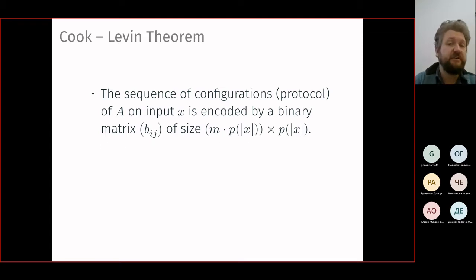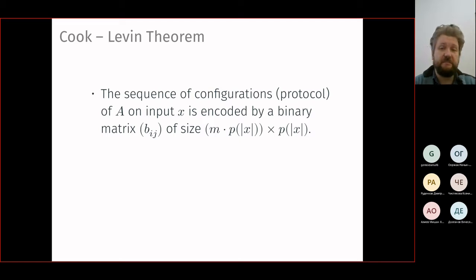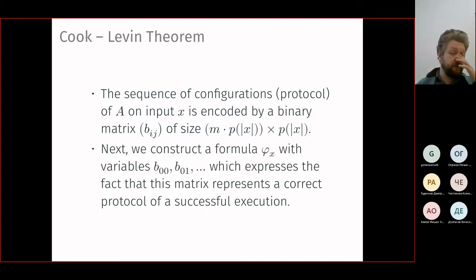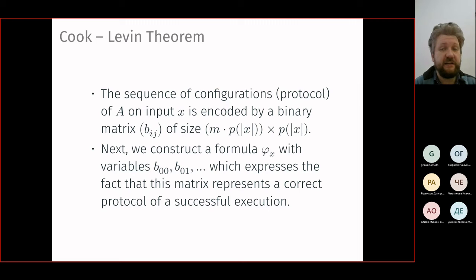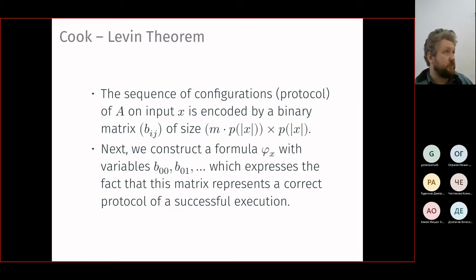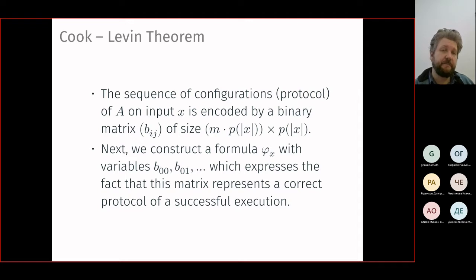This binary matrix — the correct protocol — will be the witness encoded as a satisfying assignment for a boolean formula. The matrix is a tuple of zeros and ones; we denote its elements by boolean variables b_{i,j}. We construct a formula φ expressing the fact that this matrix represents a correct protocol of a successful execution of our machine. So: input x gives answer yes if and only if there exists a successful execution trajectory.